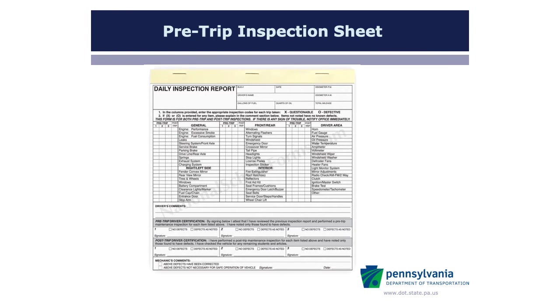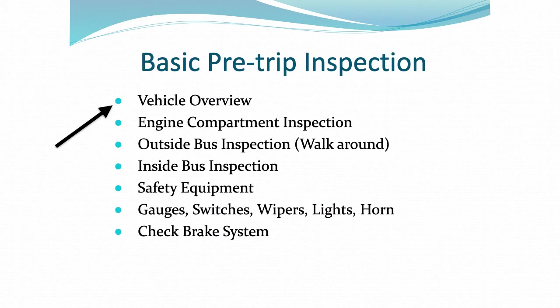If necessary, obtain a pre-trip inspection sheet to not only help you complete a full and proper inspection, but also to be a ready history — a record that could be presented to the authorities should something happen. These are relatively inexpensive and can be easily purchased online. To ensure a thorough pre-trip inspection is completed, you should develop a routine.